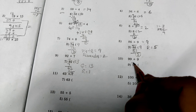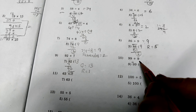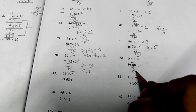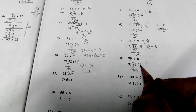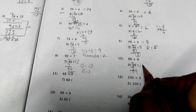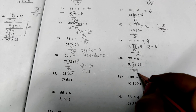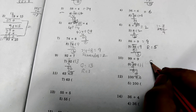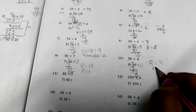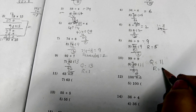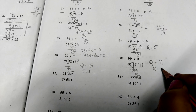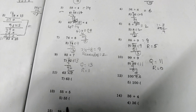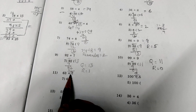Next problem: 99 divided by 9. Here we are taking 1 digit — 9. 9 once are 9. 9 minus 9 is 0. Get down 9. 9 once are 9 again. 9 minus 9 is 0. Here quotient is 11. Remainder is 0. Answer is 11. Move to the next problem.